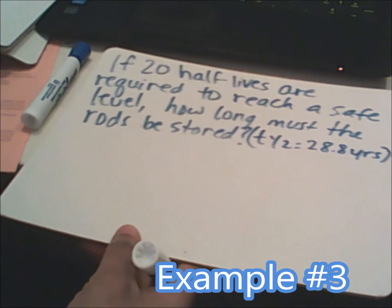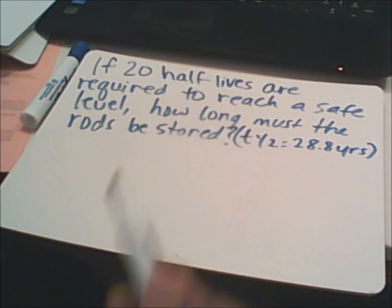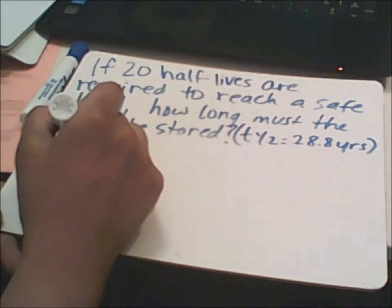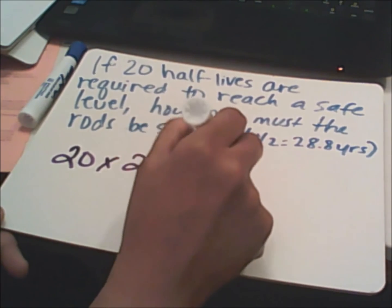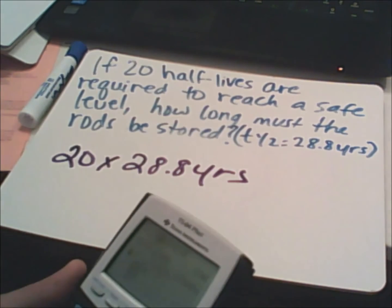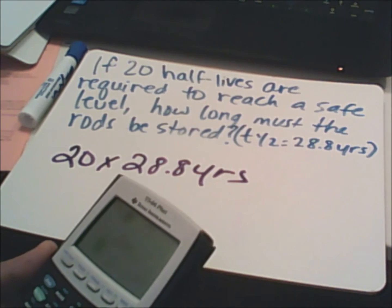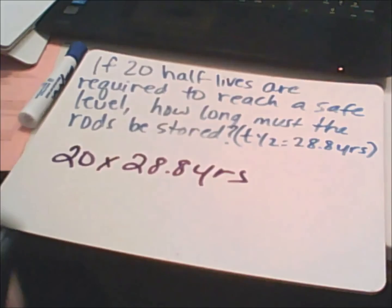Next example: if 20 half-lives are required to reach a safe level, how long must the rods be stored? The half-life cycle is 28.8 years — meaning every 28.8 years your sample is depleting, but it's going to take 20 half-lives. Multiply 20 times 28.8 years and you get 576 years.